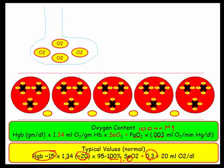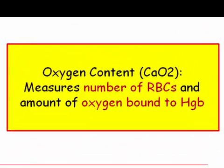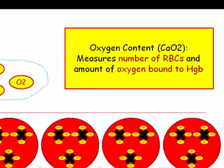As you can see, the PaO2 contributes very little to the overall oxygen content. The main contributor to oxygen content under normal circumstances and normal meaning with normal saturation is the hemoglobin level. So the oxygen content measures the number of RBCs and the amount of oxygen bound to hemoglobin.